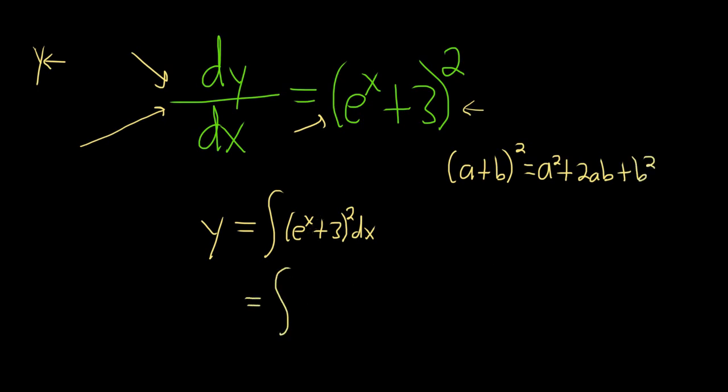So here, we'll do just that. We'll square the e to the x, so we'll get e to the x squared. I'll go ahead and write it like that, e to the x squared. And then the 3 and the e multiplied times 2, so 6 e to the x, right, 2ab plus 3 squared is 9.